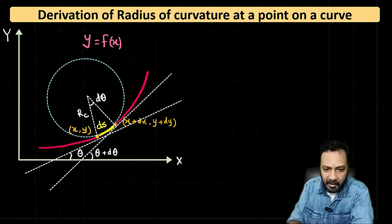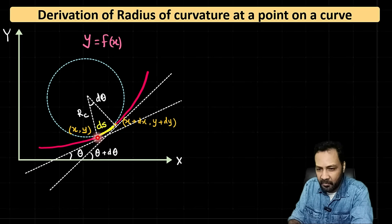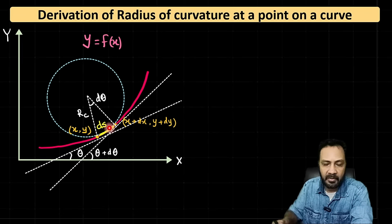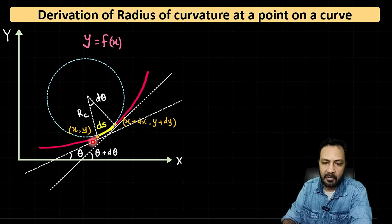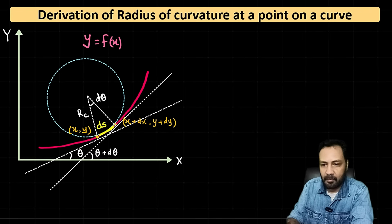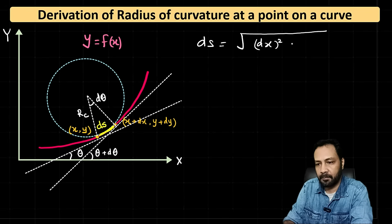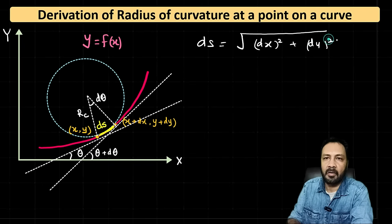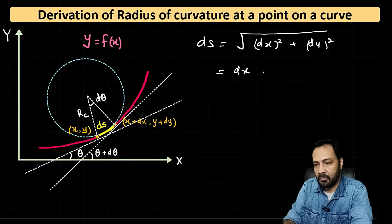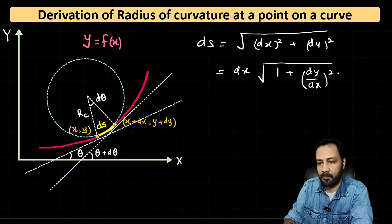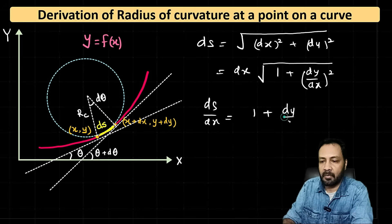To find ds/dx: since the two points are very close, ds is approximately the straight-line distance from (x, y) to (x + dx, y + dy). By the distance formula, ds = √(dx² + dy²). Taking dx outside the square root gives ds = dx · √(1 + (dy/dx)²). Therefore ds/dx = [1 + (dy/dx)²]^(1/2). This is equation 2.